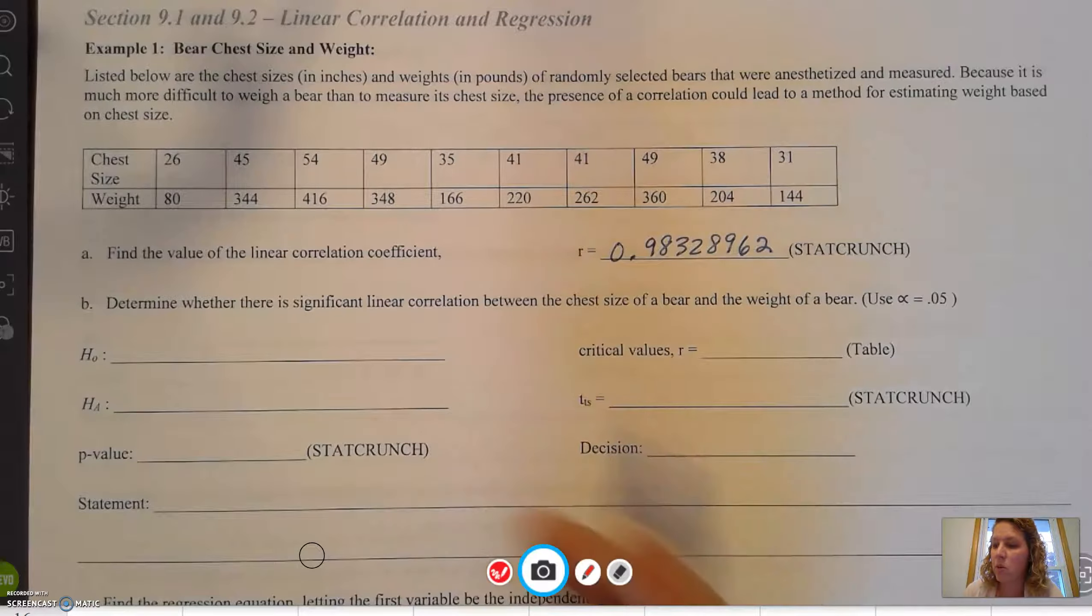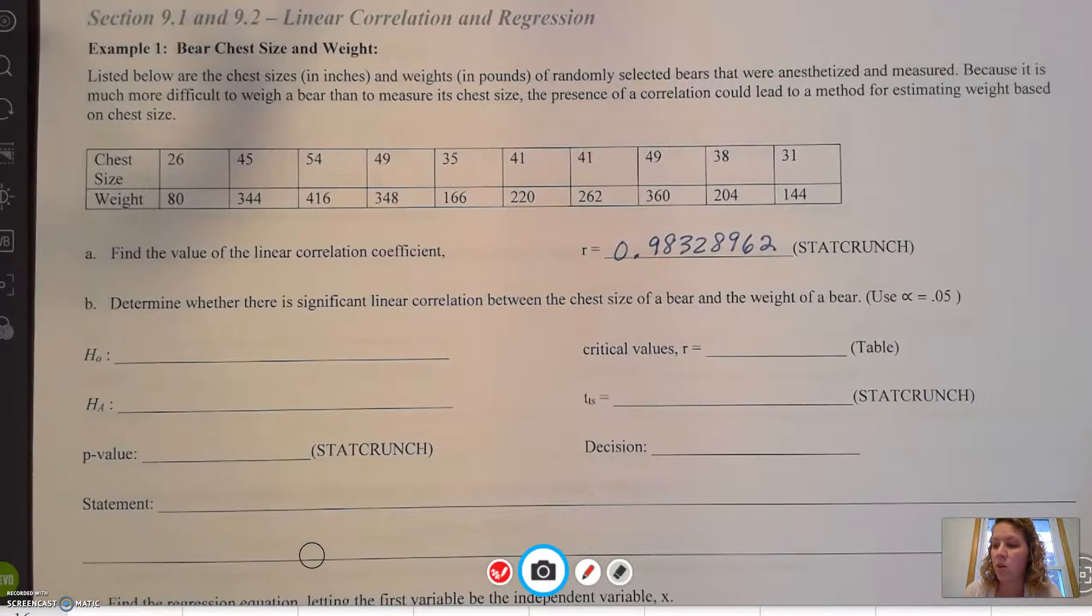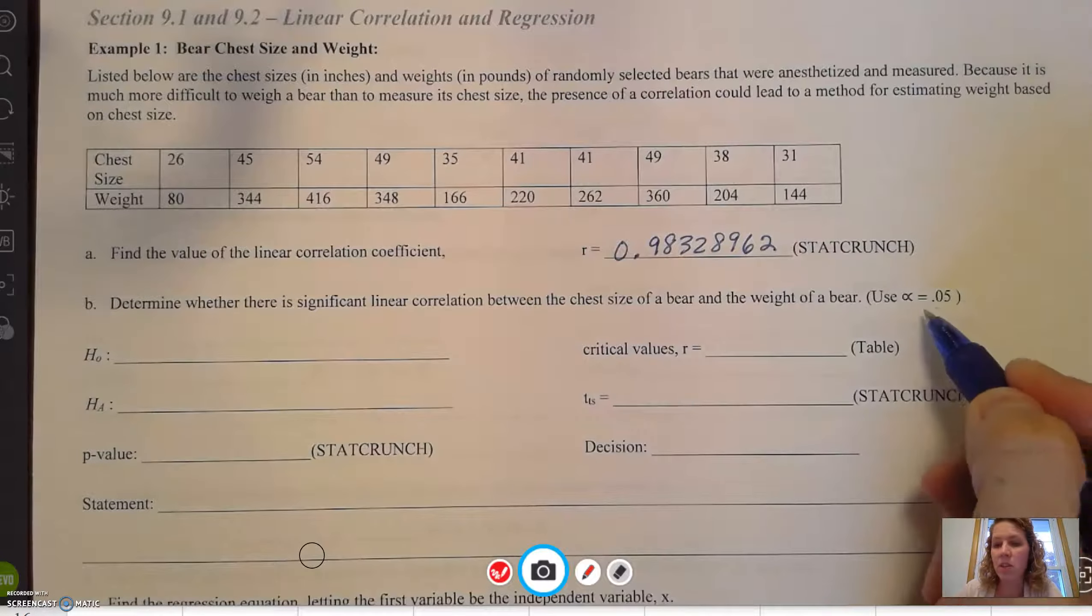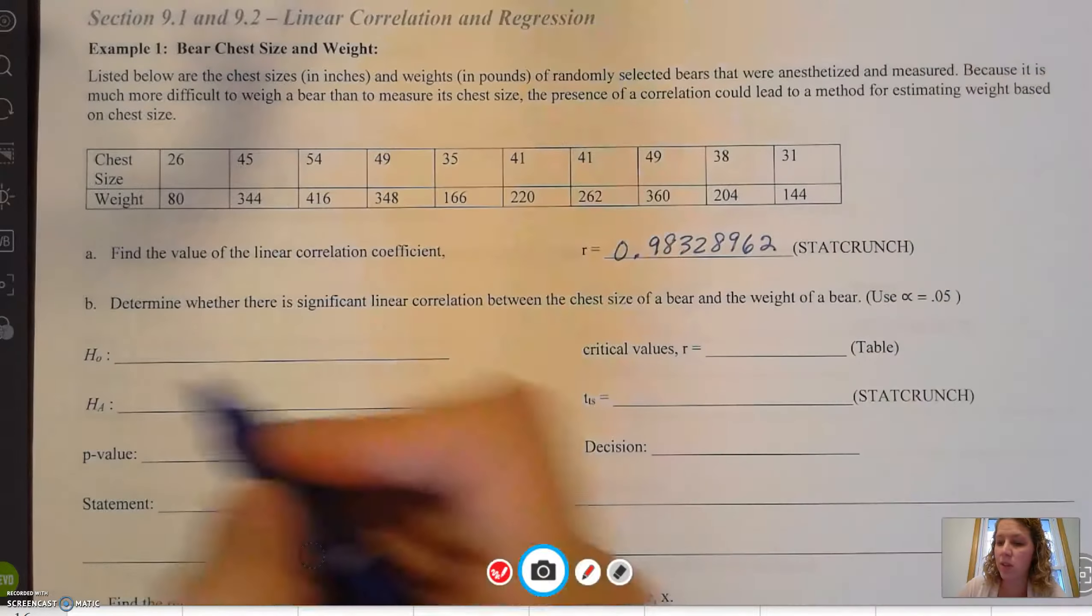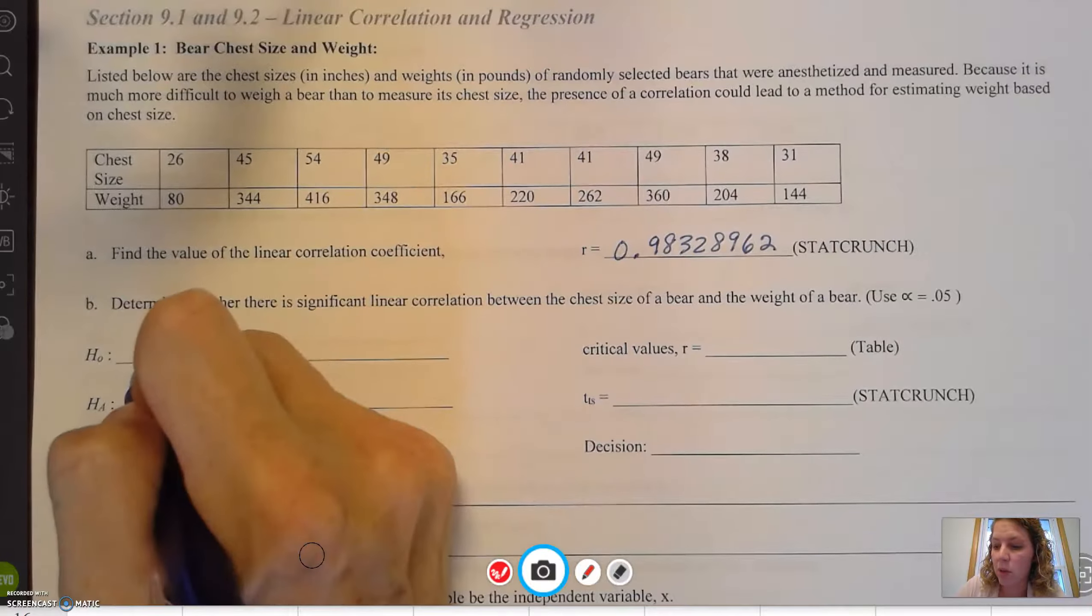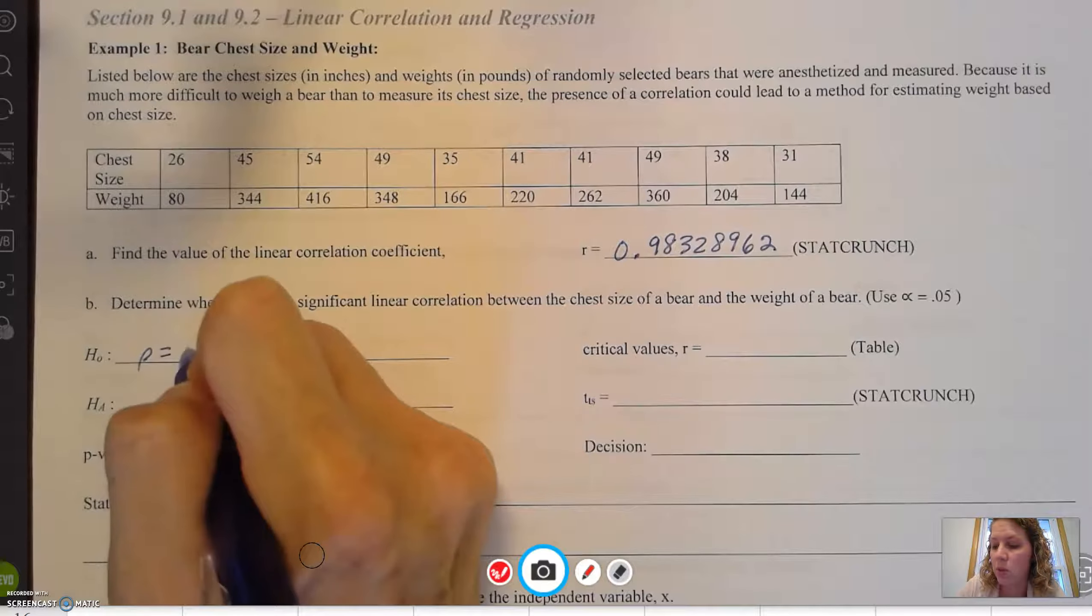Next, we need to determine whether there is significant linear correlation between the chest size of a bear using the significance level of 0.05. So H₀ is going to be ρ = 0, which means assume no linear correlation.